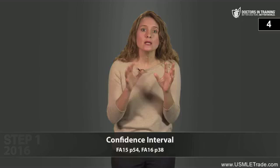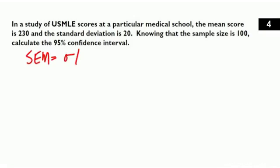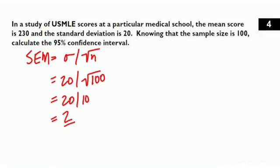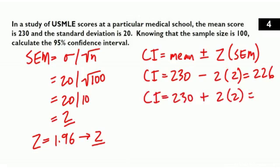In a study of USMLE scores, the mean score from a random sample of 100 students is 230, and the standard deviation is 20. Calculate the 95% confidence interval. The standard error of the mean equals 20 divided by the square root of 100, or 20 divided by 10, which is 2. Using Z = 2 for the 95% CI: 230 minus 2 times 2 equals 226, and 230 plus 2 times 2 equals 234. So the 95% confidence interval is 226 to 234.